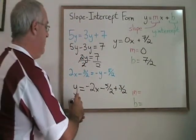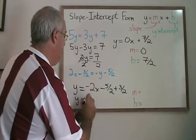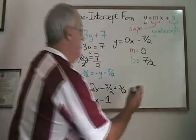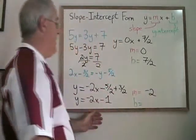This simplifies to give me y equals negative 2x minus 1. So my slope is negative 2, and my y-intercept is negative 1.